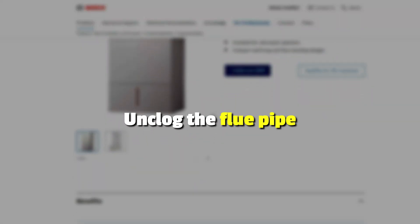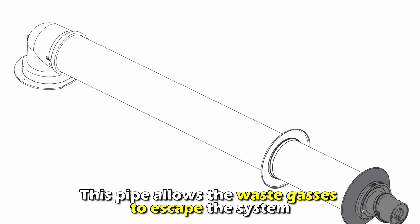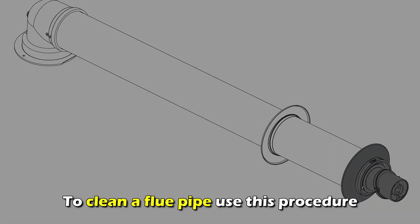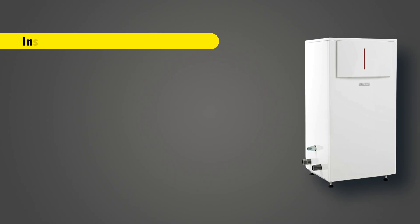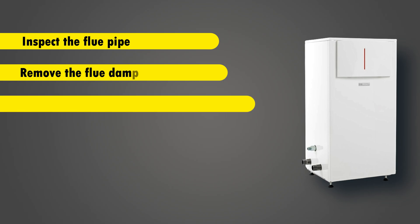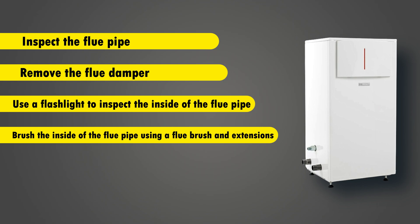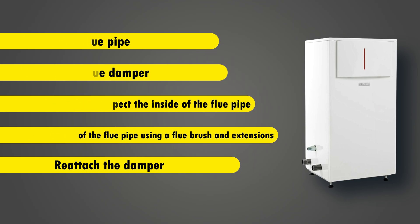Unclog the flue pipe. This pipe allows the waste gases to escape the system. To clean a flue pipe, use this procedure: switch off the boiler from the power source and inspect the flue pipe. Remove the flue damper and use a flashlight to inspect the inside of the flue pipe. Brush the inside of the flue pipe using a flue brush and extensions. Reattach the damper and that's it.